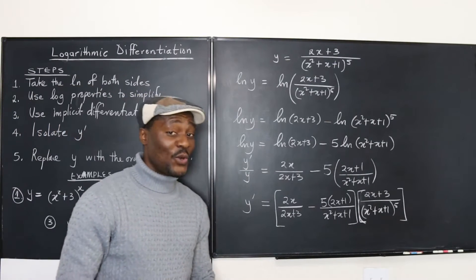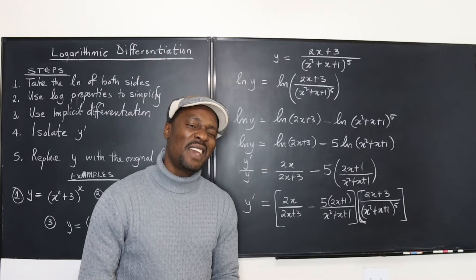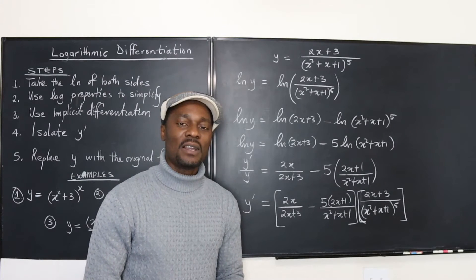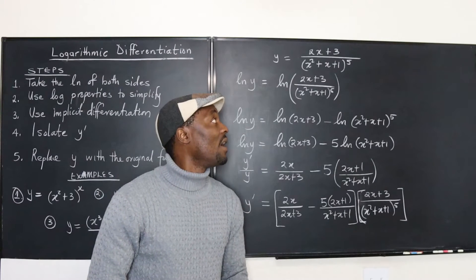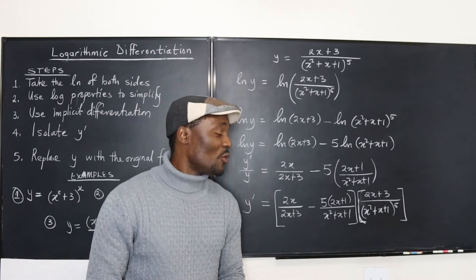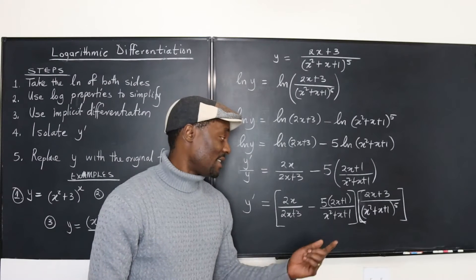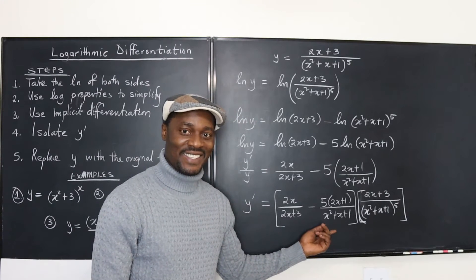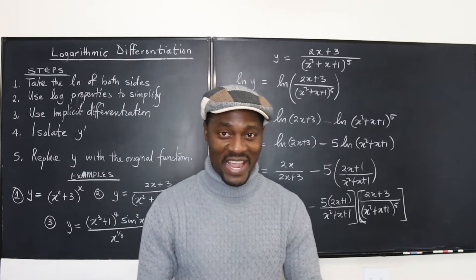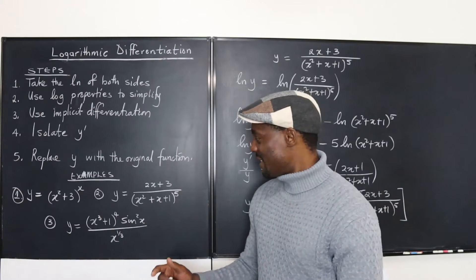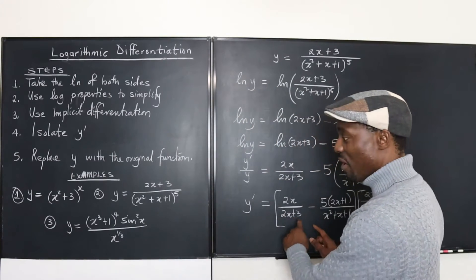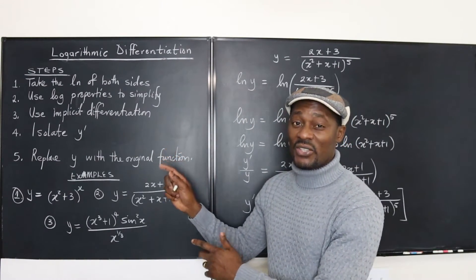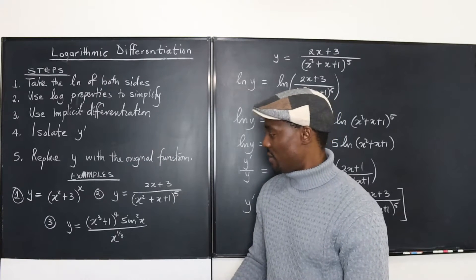Some of you might say you'd rather just use the quotient rule. Well, you might say that in this case, but when it gets more complicated, logarithmic differentiation becomes the better option — it's a lot easier.